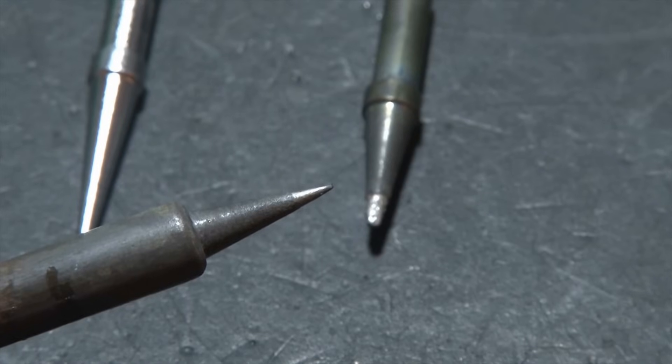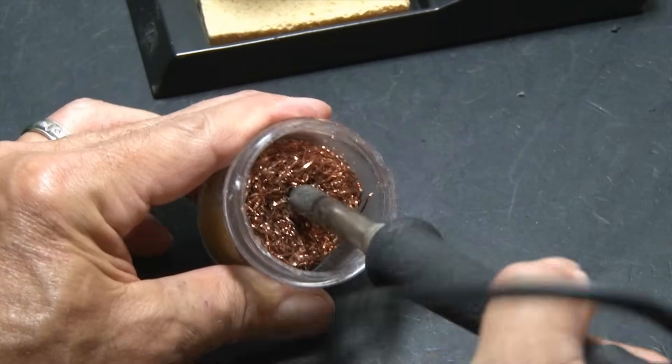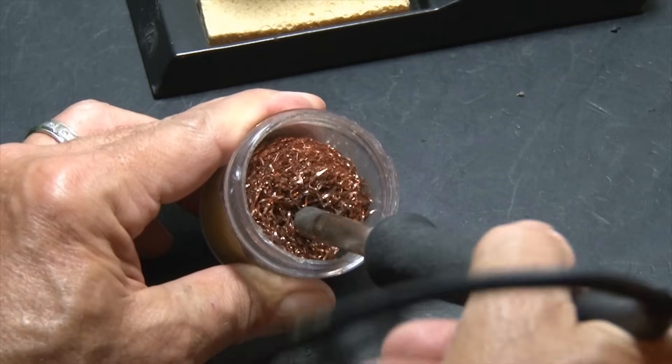The conical tip that we already have installed will be fine for general PCB soldering. Now you always want to start with a clean solder tip, so we'll make sure that tip is clean and free of any old solder.